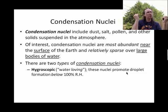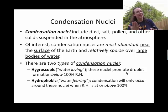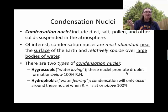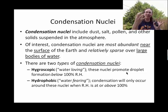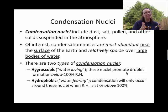Hygroscopic CCN are so ready to party, so social, that they can get condensation to occur when the relative humidity is less than 100%. And then there are the reluctant cloud condensation nuclei — those are hydrophobic cloud condensation nuclei. They'll serve as a particle around which the condensation process can occur, but you really need lots of water vapor in the air — close to or at 100% relative humidity — in order for them to get going.